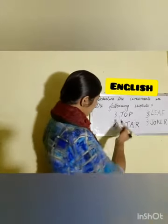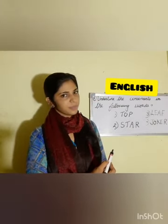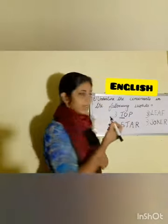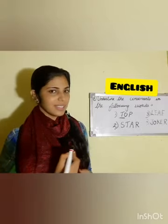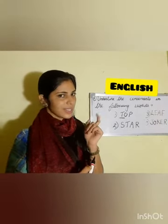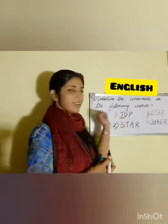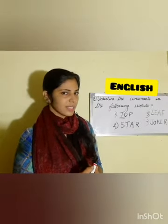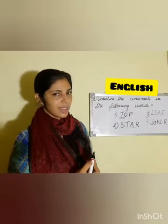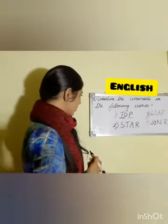The first word is top. Let's say the spelling: T-O-P, top. Then T — the first letter is T. Is T a vowel or consonant? It's a consonant. So underline the letter T. Then our next letter is P. P is also a consonant, so just underline the letter P.